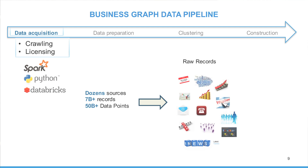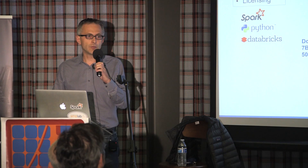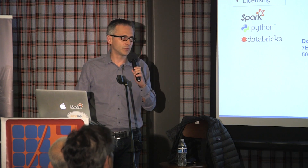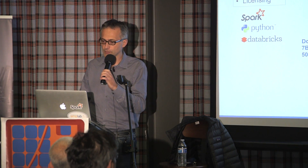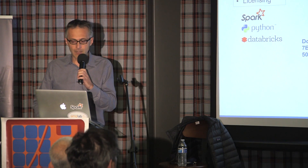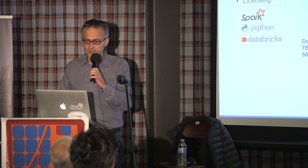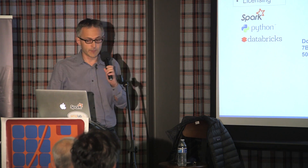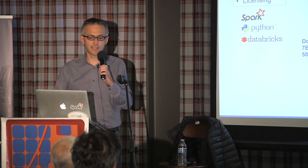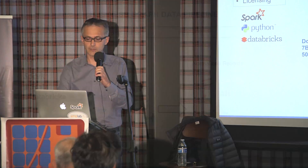In data acquisition, we basically crawl and license data from dozens of sources, including billions of records and tens of billions of data points. We retain that information over time, as we use some historical data for creating machine learning models. The output of that step includes many different types of records which might represent the same information in different ways, such as employees or revenues.